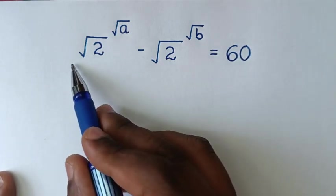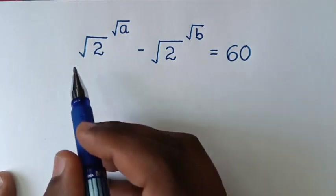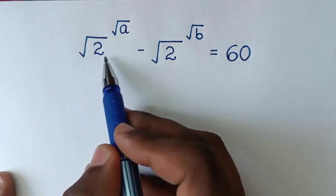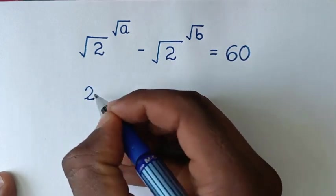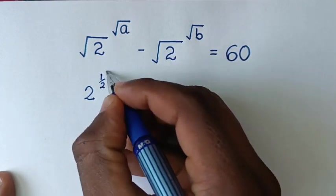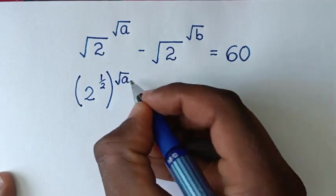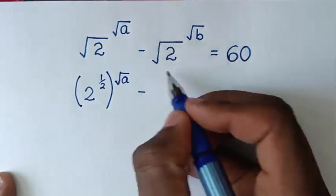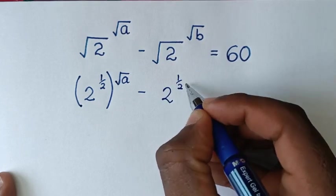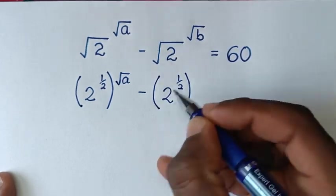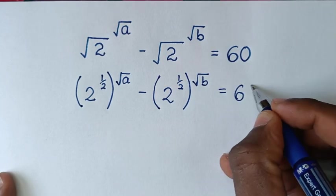To find the values of a and b from this equation. In the first step, we'll change square root of 2 into exponent form. Square root of 2 is the same as 2 power of a half, then bracket this power of square root of a, minus 2 power of a half, then bracket this power of square root of b, is equal to 60.